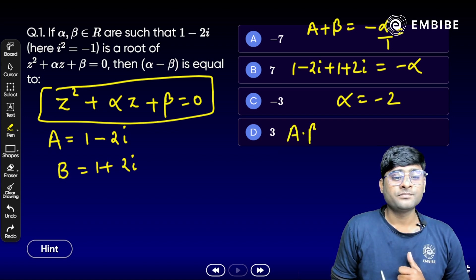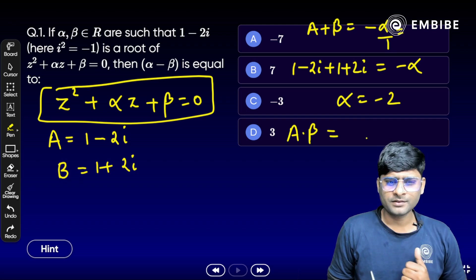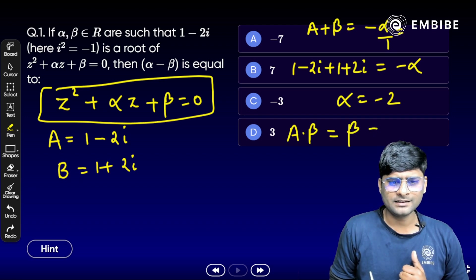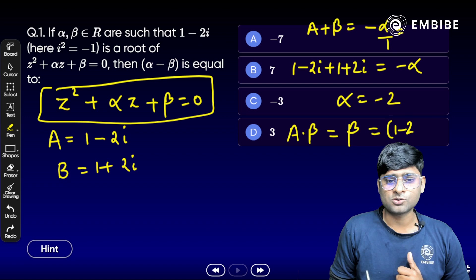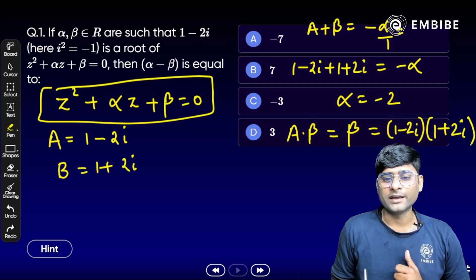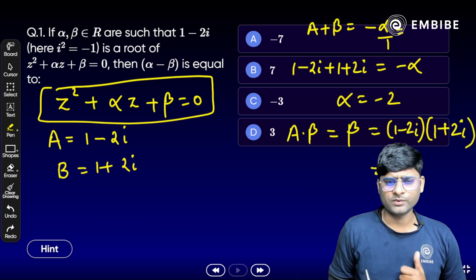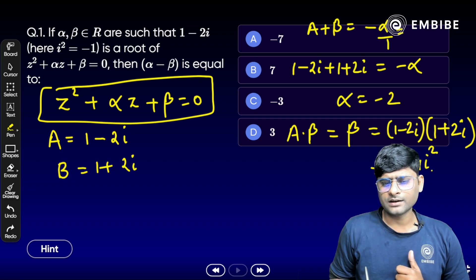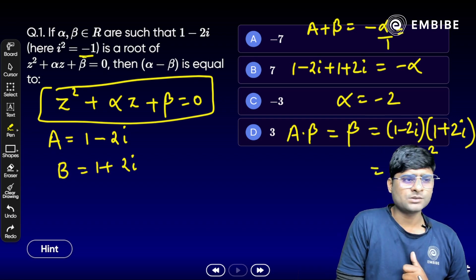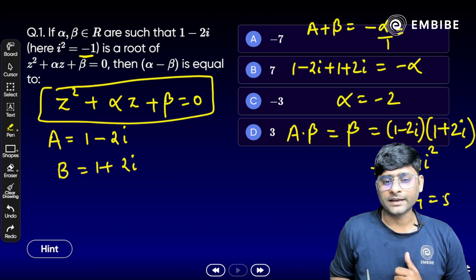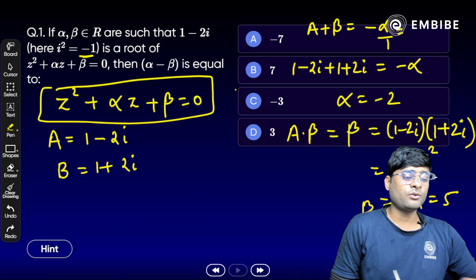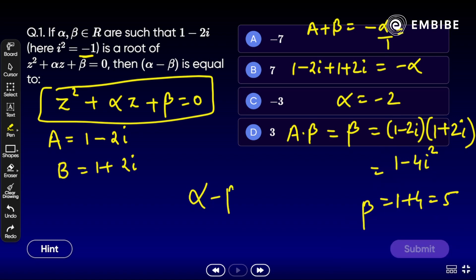Now the product of roots: β divided by 1 equals (1 - 2i)(1 + 2i) = 1 - 4i². Since i² = -1, this becomes 1 + 4 = 5, so β = 5. Finally, α minus β = -2 minus 5 = -7. That is the right answer — within a minute you can solve it.